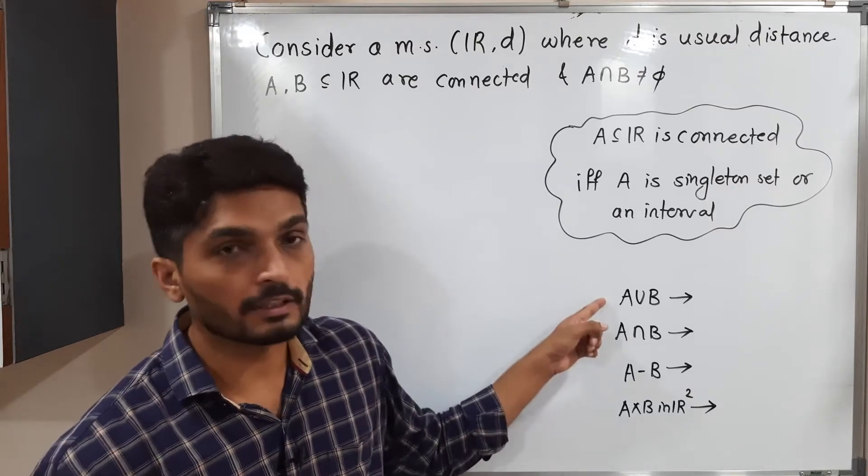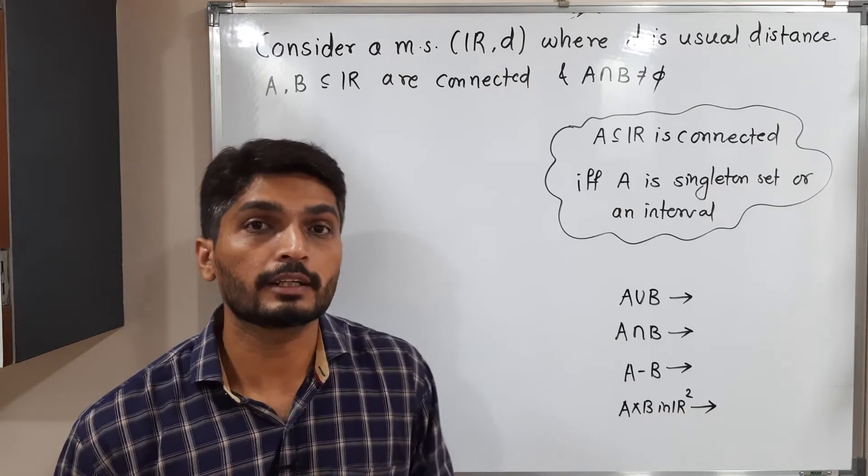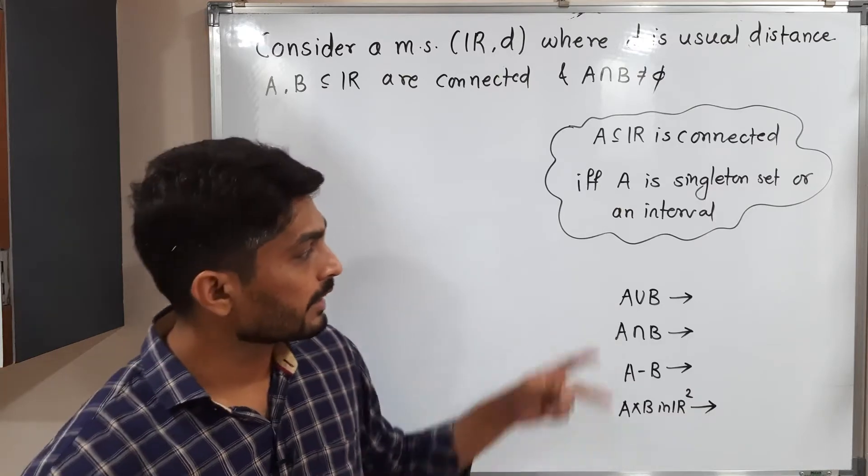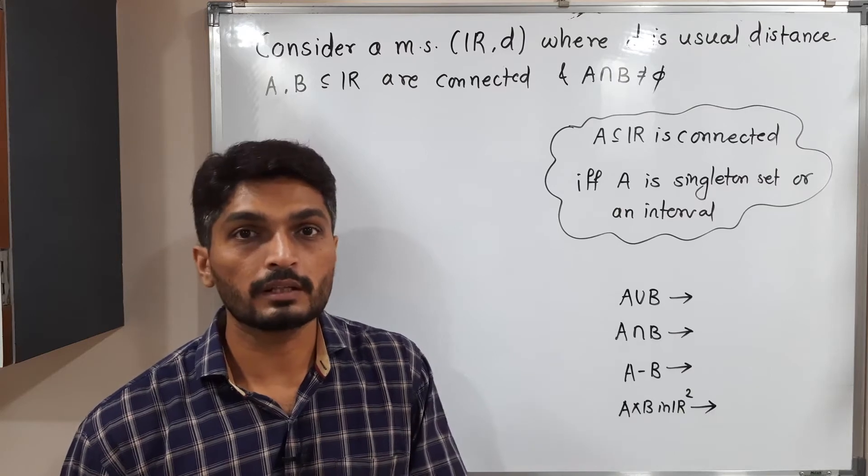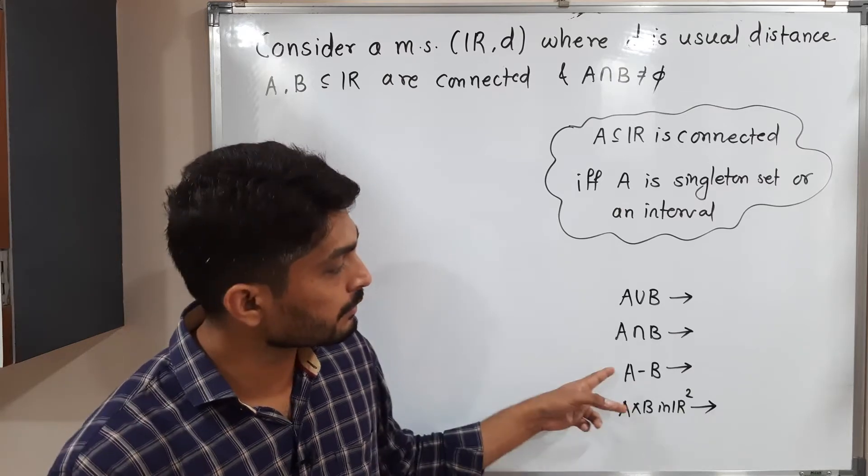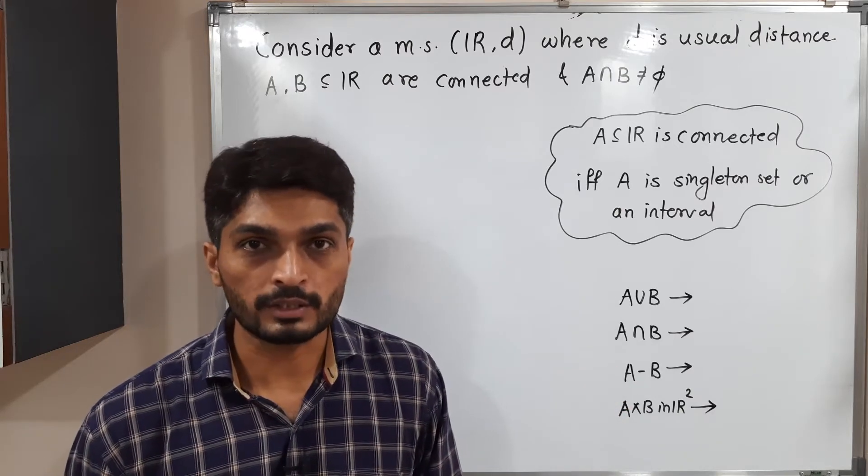Given that both are connected and intersection is non-empty, we have to decide whether all these four sets are connected or disconnected. Out of that, the first two we have already discussed in the previous video. So we will take a short overview of it and after that we will discuss the remaining two sets.